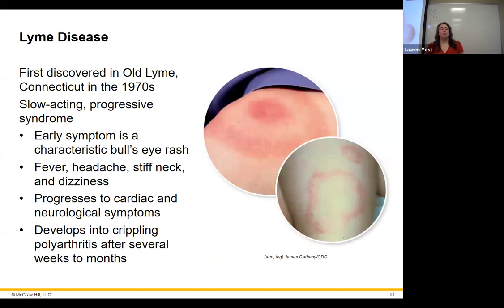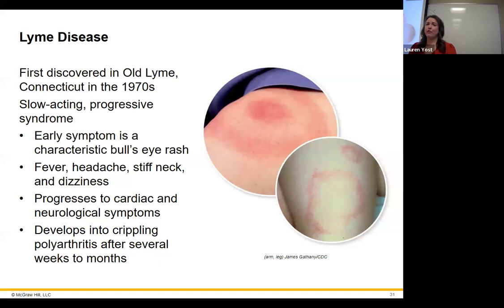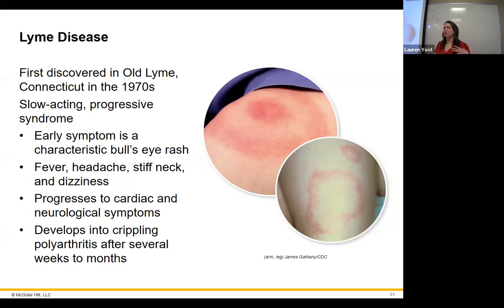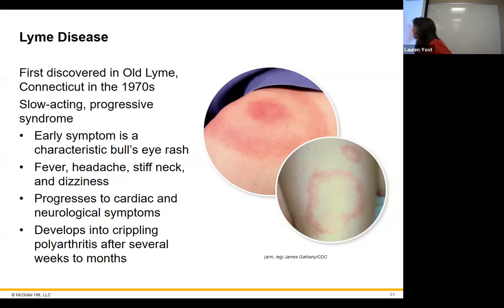Lyme disease — transmitted by tick bite. You get the bullseye rash and can have neurological symptoms over time. It's a very slow-presenting disease: typically fever, headache, stiff neck, dizziness — symptoms akin to meningitis — but very slow to present, taking months. It can eventually lead to arthritis.